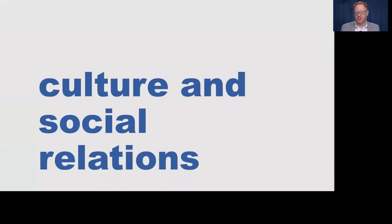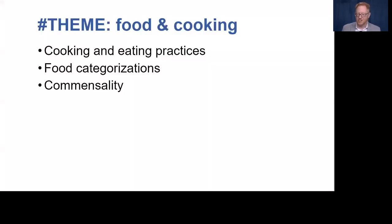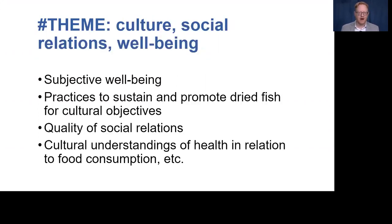Moving on to the socio-cultural dimensions of dried fish, these encompass shared knowledge and practices associated with one or more communities pertaining to the production and use of dried fish products. Our theme of culture and social relations encompasses food and cooking culture, social relations, well-being, and gender. The thematic tag food and cooking classifies literature describing cooking and eating practices, food categorizations, and commensality — the social practices of eating together. Our broader thematic tag culture, social relations, and well-being includes subjective well-being, practices to sustain dried fish for cultural objectives, quality of social relations, and cultural understandings of health in relation to food consumption.